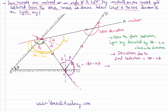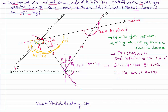Both deviations are in the clockwise direction. So the total deviation is the sum: (180 minus 2α) plus (180 minus 2β), which gives 360 minus 2(α + β).